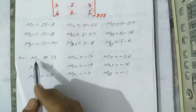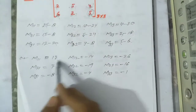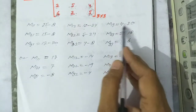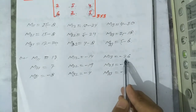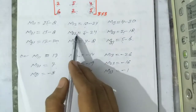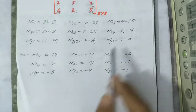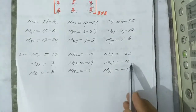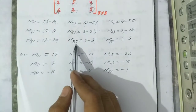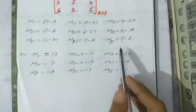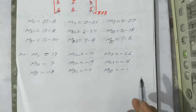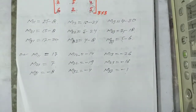Simplifying all minors: m11 = 25 − 8 = 17; m12 = 10 − 24 = −14; m13 = 4 − 30 = −26; m21 = 15 − 8 = 7; m22 = 5 − 24 = −19; m23 = 2 − 18 = −16; m31 = 12 − 20 = −8; m32 = 4 − 8 = −4; m33 = 5 − 6 = −1. This is the way to find the minors of a square matrix of 3 by 3 order.